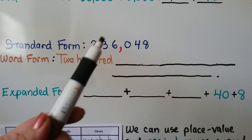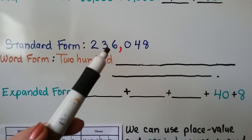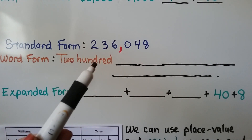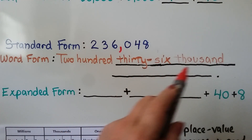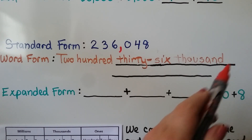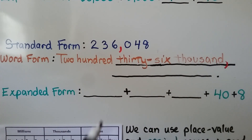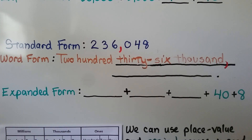Here we have the number written in standard form and we need to put it into word form. This is the thousands period, and we have two hundred thirty-six thousand, so we write 'two hundred thirty-six thousand.' We put a comma here. We don't have any hundreds, so we just write 48: two hundred thirty-six thousand, forty-eight.